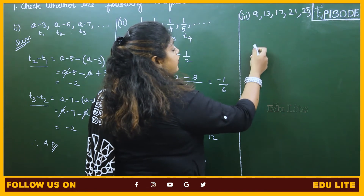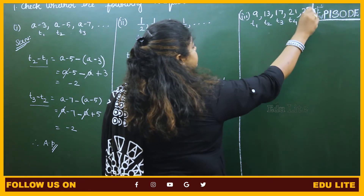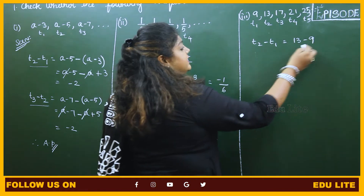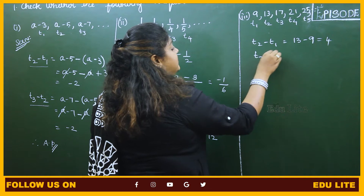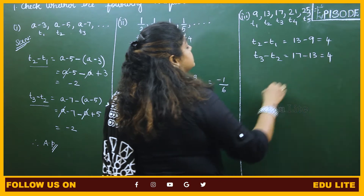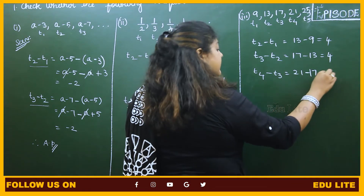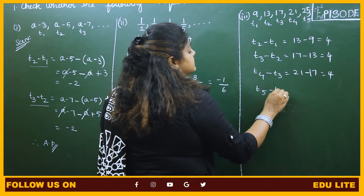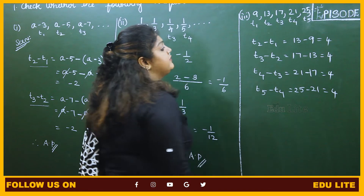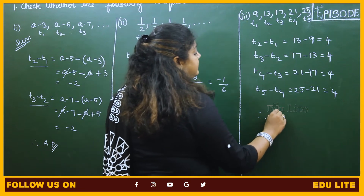For the third subdivision, we identify T1 through T5. T2 minus T1 is 13 minus 9, which is 4. T3 minus T2 is 17 minus 13, which is also 4. T5 minus T4 is 25 minus 21, again 4. The common difference between any two consecutive numbers is equal, which is 4. Therefore, the given sequence is an AP.